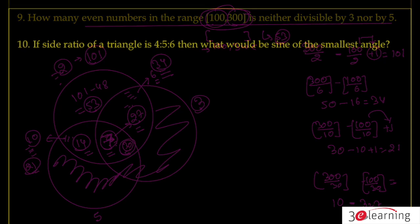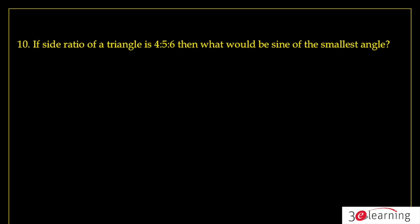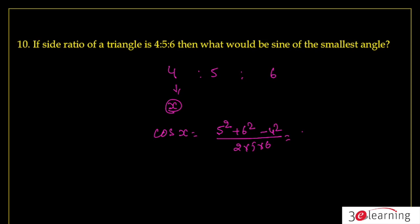Question number ten: a triangle has sides in the ratio 4:5:6. Find the trigonometric ratio for the smallest side. Using the cosine rule: cos A = (5² + 6² − 4²) / (2×5×6) = (25 + 36 − 16) / 60 = 45/60 = 3/4. Then sin A = √(1 − 9/16) = √7/4. So the answer is sin A = √7/4.